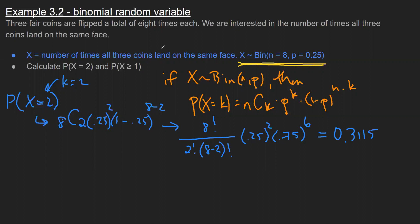So in words, that represents what's the chance that when I do this experiment—when I flip these coins eight times—there's a little over a 31% chance I would get exactly two of those times where they all match.